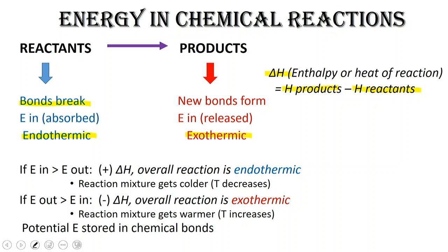The delta H, or enthalpy of the reaction, is going to be the enthalpy of the products minus the enthalpy of the reactants. If we have more energy going into the system than going out, we will have an overall endothermic reaction — delta H is positive. If this reaction is taking place in a test tube or beaker, when you put your hand on it, it feels cold. The energy is being absorbed from the surroundings into the reaction mixture; energy transfers from your hand into the test tube, so it feels cold.